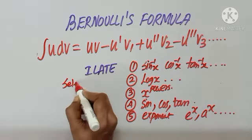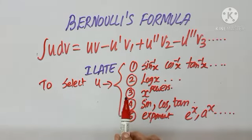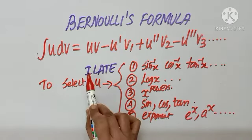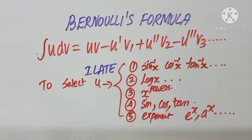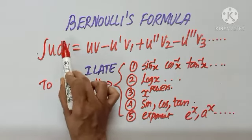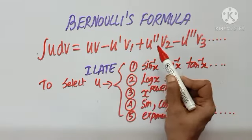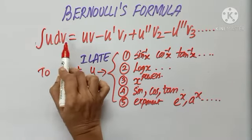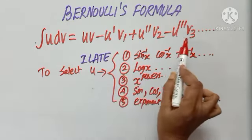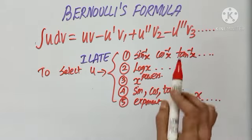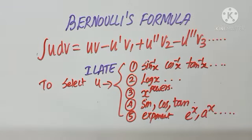Selecting u, we mostly adopt the ILATE principle: I for Inverse, L for Logarithm, A for Algebraic, T for Trigonometry, and E for Exponent. Once I select u, all that remains I call dv. For u, I keep on differentiating to get u-dash, u-double-dash, u-triple-dash, and so on. For dv, I keep on integrating to get v, v1, v2, v3, and so on. Then we substitute in the formula and simplify.